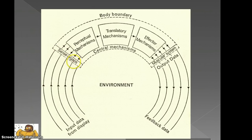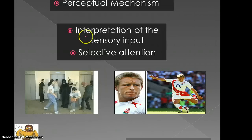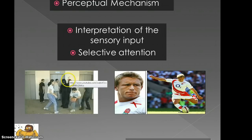That will now be filtered into our perceptual mechanisms. In essence, perceptual mechanisms is the interpretation of the sensory input — we've received the information and then we need to interpret what it all actually means. We also need to selectively attend to the correct information. Selective attention is about removing irrelevant information and identifying the important information that will give us a successful outcome.